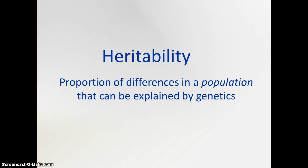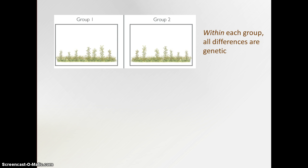Let me give you an example. Let's say we have two groups of plants, and let's stipulate that within each group, all differences are completely genetic. So we see here that some of these plants are taller than others, some are shorter — some of them just got tall genes and short genes. But the two groups on average are identical at the outset. But now let's say we give one group really good soil and light, really high quality growing conditions, and the other group doesn't have good soil, not good light, maybe they don't get enough water.